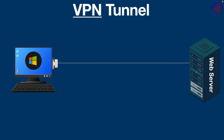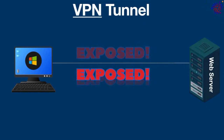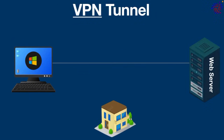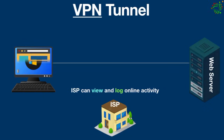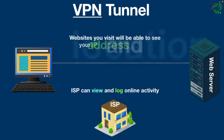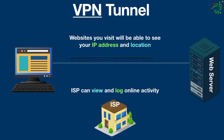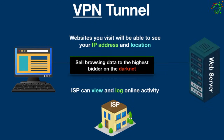When you connect to the internet without a VPN, a lot of your data is exposed. Your internet service provider can view and log your online activity, while the websites you visit can see your IP address and location. These companies have a strong incentive to dig into your private life — they sell your browsing data to the highest bidder on the dark net. They can also throttle your bandwidth if you frequently download large files.